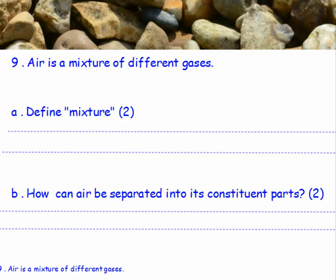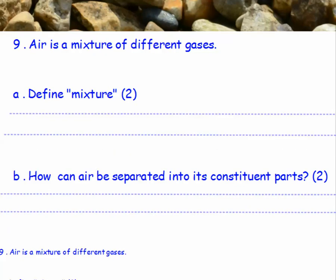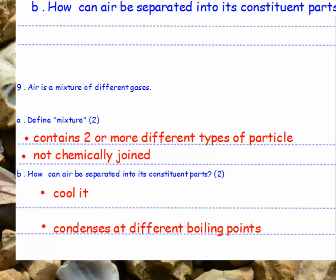Air is a mixture of different gases. Define mixture. Part B: how can air be separated into its constituent parts? The definition of a mixture is something which contains two or more different types of particle which are not chemically joined. Air can be separated into its constituent parts by cooling it — the different parts condense at their different boiling points.